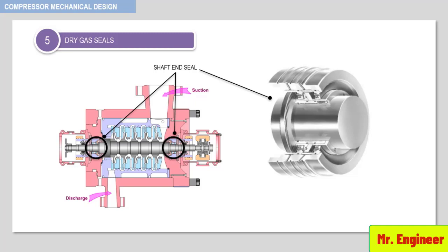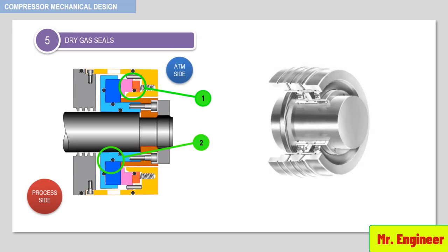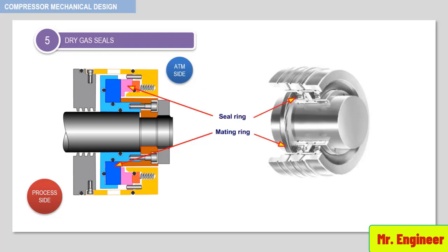A typical dry gas seal consists of two parts: a spring-loaded stationary seal face sealed by an O-ring, and a rotating seat. The rotating and stationary faces act against each other toward providing sealing action. The sealing faces of the seal ring and mating ring maintain each other without contact, resulting in high operational reliability and long service life.